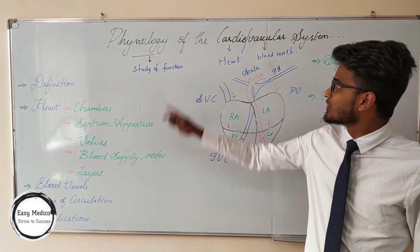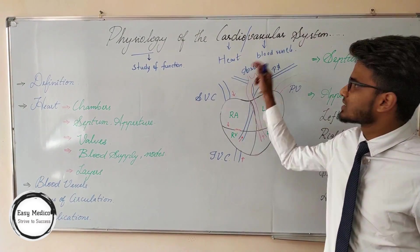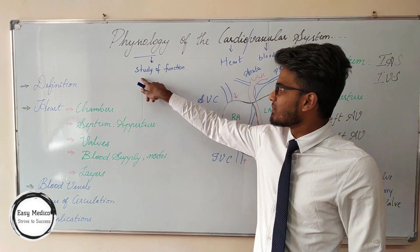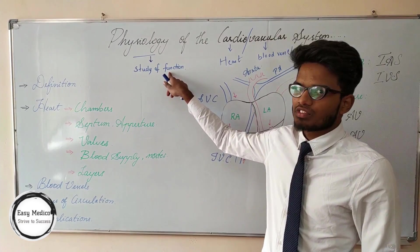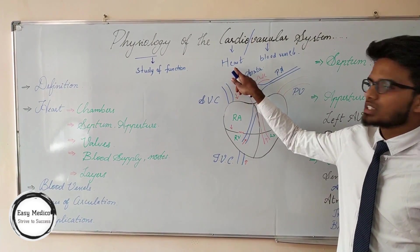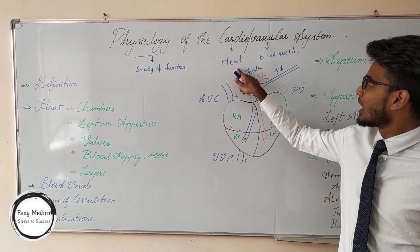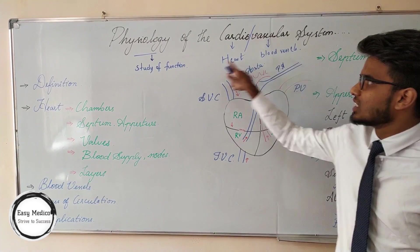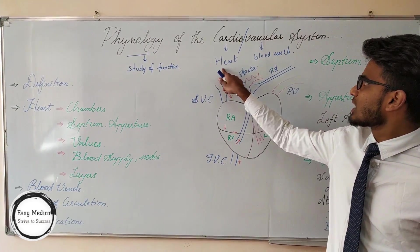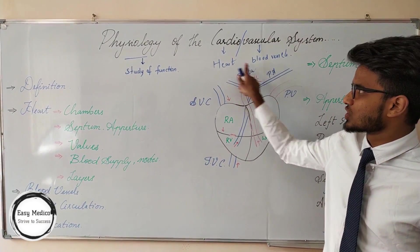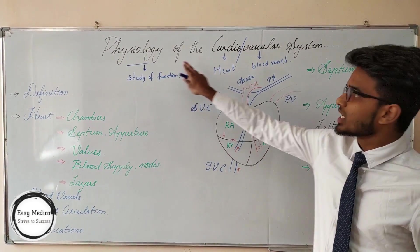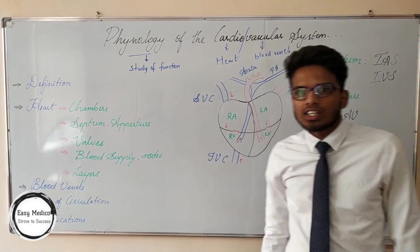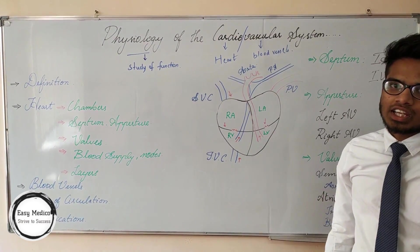The Physiology of the Cardiovascular System. Physiology means study of the function. Cardiovascular means cardio — heart — vascular — blood vessel. The study of the function of the heart and the blood vessel is known as the Physiology of the Cardiovascular System. The heart is a muscular organ.